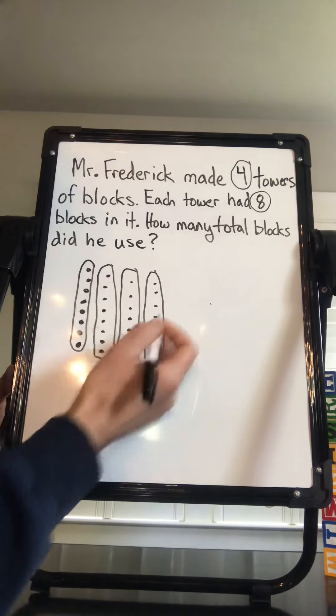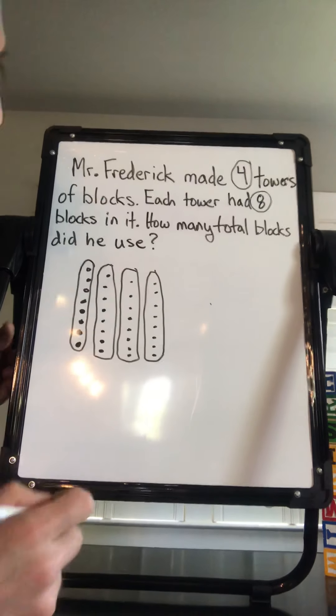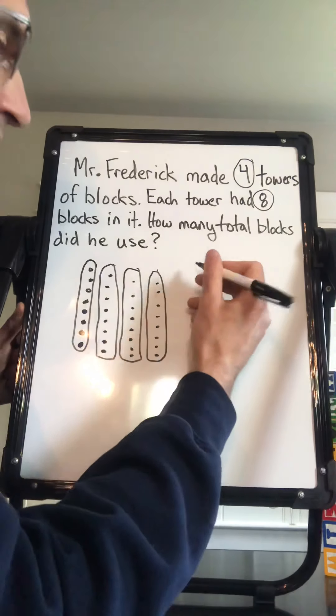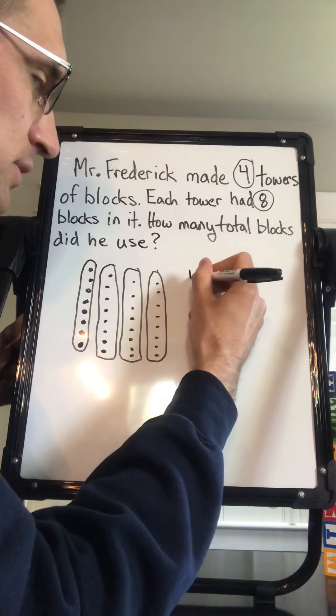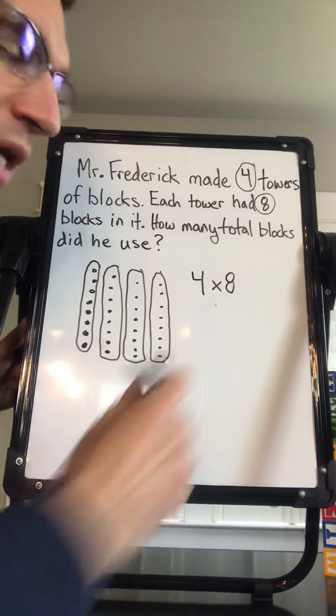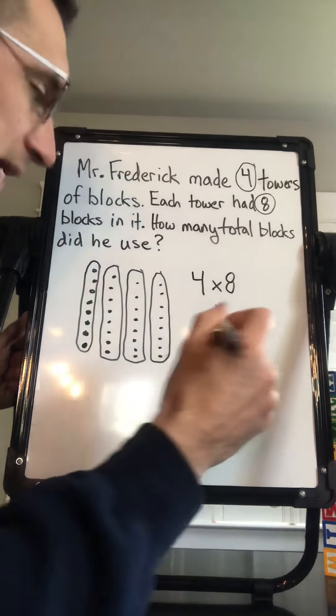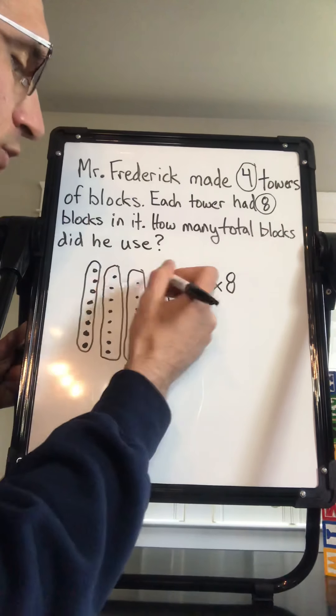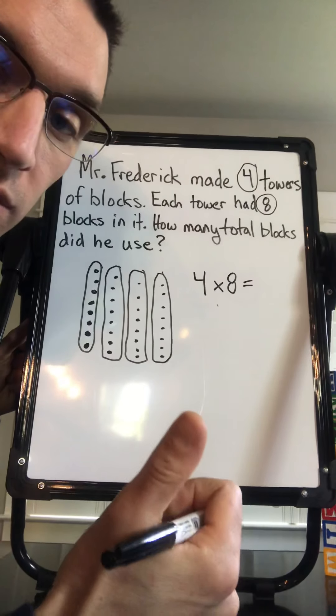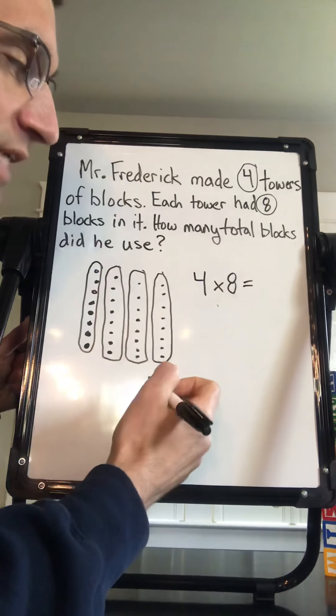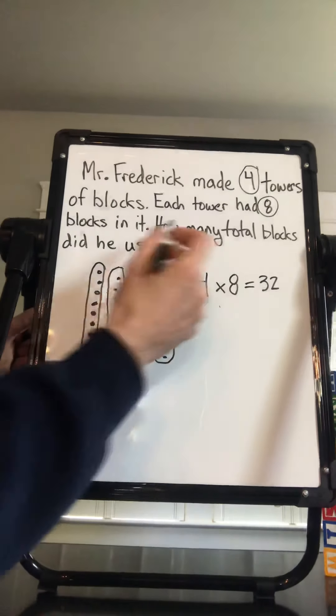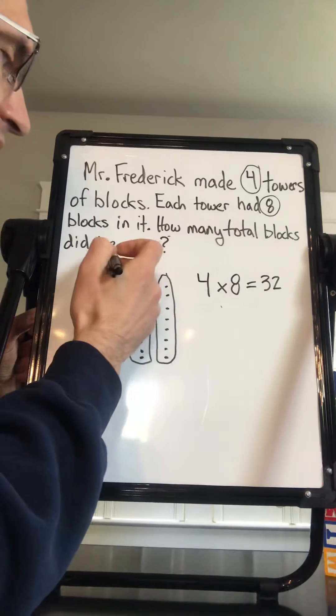Okay, so now we have our four towers, and in each of those towers I just drew eight dots to represent the blocks. Now I'm going to write this as a multiplication problem to solve. So I know I have four towers, and in each of those towers I had eight blocks, so I'm going to write this problem as 4 times 8, or four groups with eight in each group. And if I roll my numbers, I know that 4 times 8 is equal to 32.